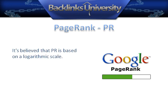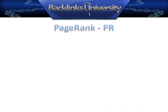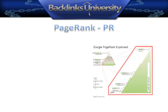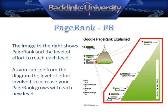It is believed that PR is based on a logarithmic scale, meaning it is much easier for your page to go from a PR3 to PR4 than it is to go from PR4 to PR5. The image on the right shows PageRank and the level of effort to reach each new level. As you can see from the diagram, the level of effort involved to increase your PageRank grows with each new level.